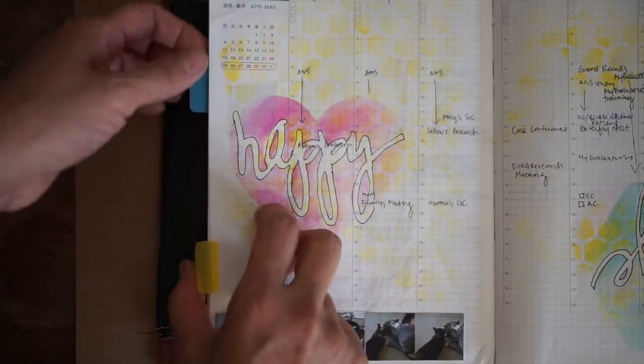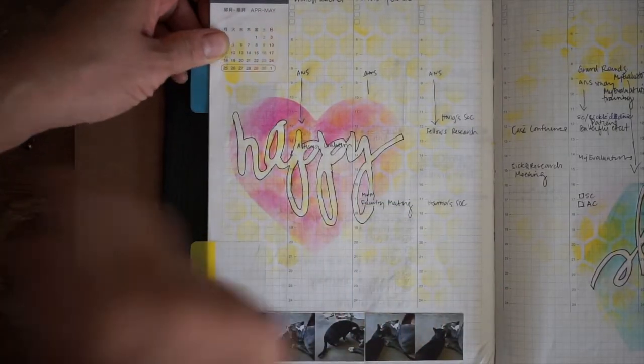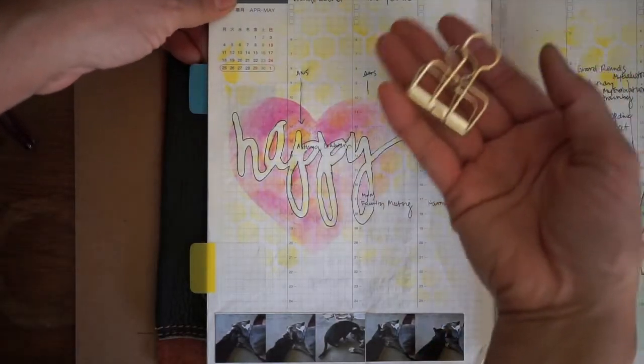I don't follow the monthly spreads as much, just for very big things. And so right now I just have a tab and these are these little plastic tabs that you can get from Post-it. These work really great. I just like the look of these gold clips and so that's why I'm using them.